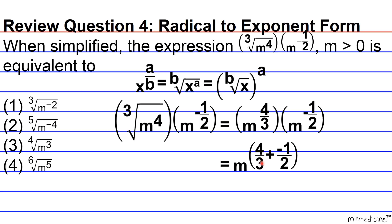To get the LCD of 6: multiply the first exponent's denominator by 2 and the numerator by 2 as well, giving 8 over 6. For the second exponent, multiply denominator and numerator by 3, giving negative 3 over 6. Adding 8 over 6 plus negative 3 over 6 gives us m raised to the 5 over 6.